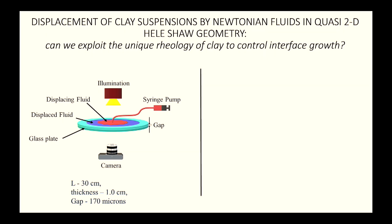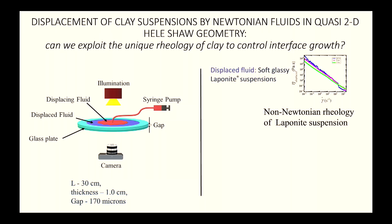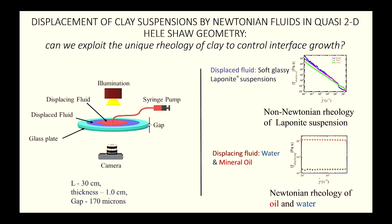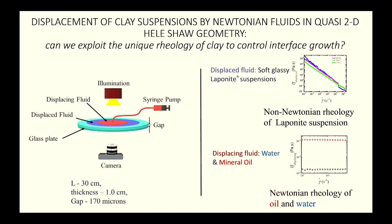The outer fluid is clay — aging and shear-thinning, non-Newtonian. The displacing fluids are water (shown in blue) and mineral oil (shown in red). Both are Newtonian; their viscosities do not depend on shear rate, unlike the clay suspension outside.